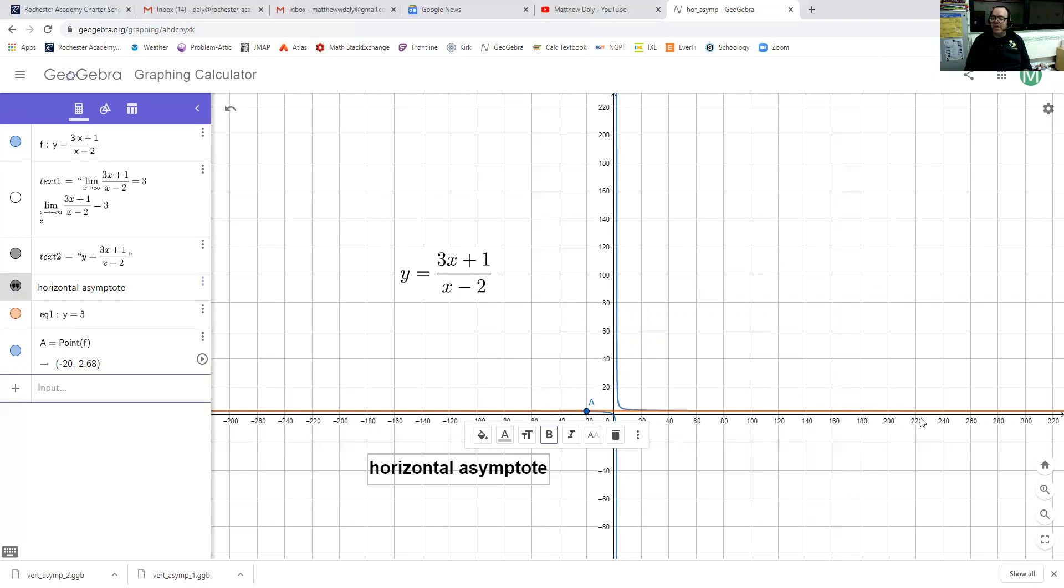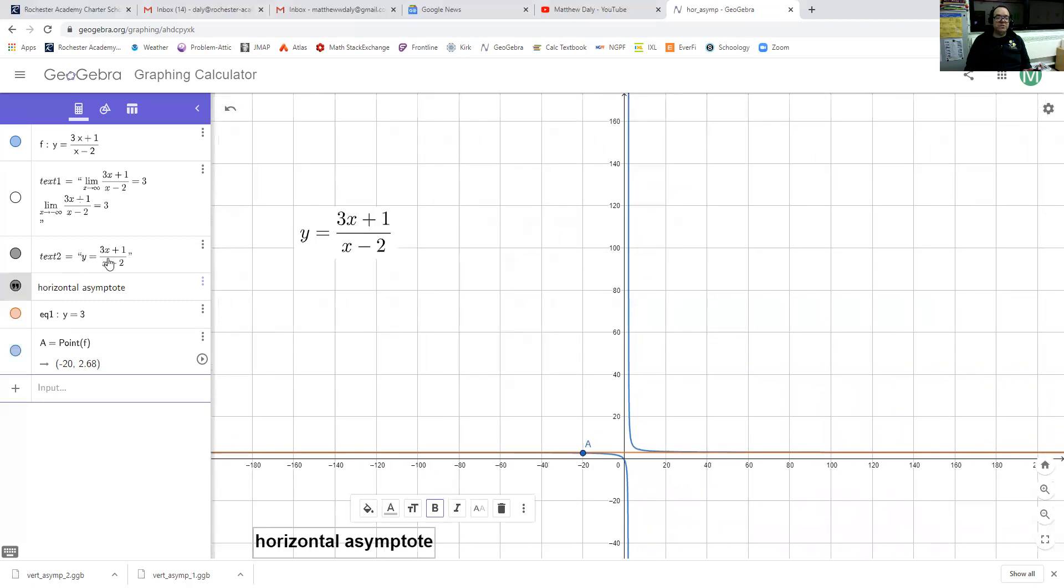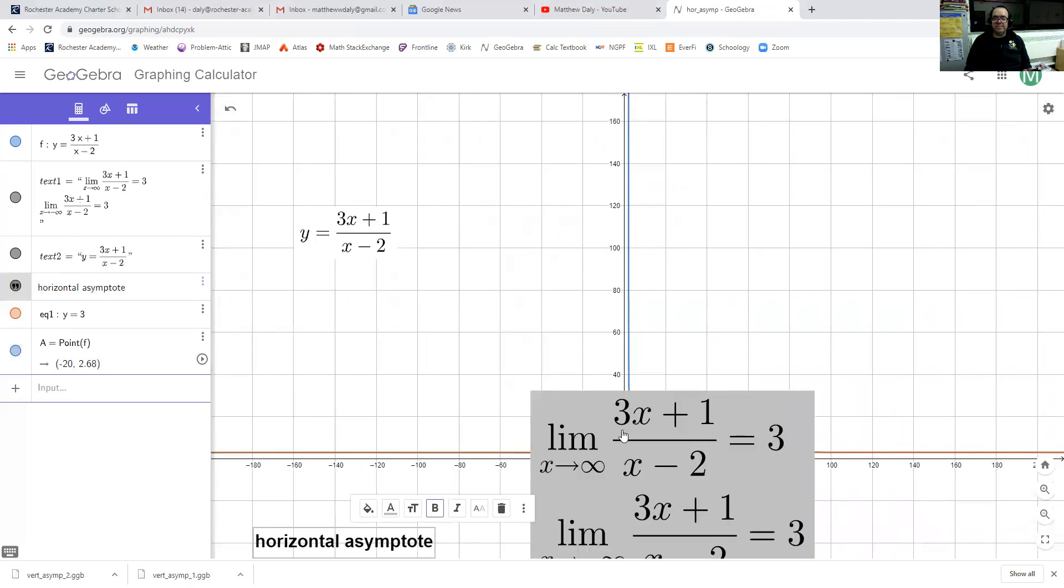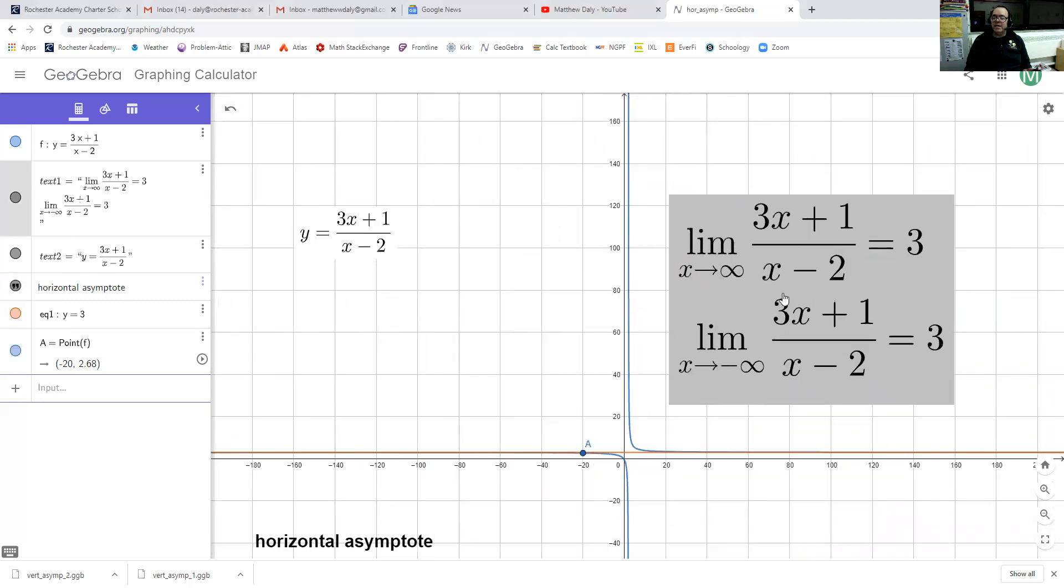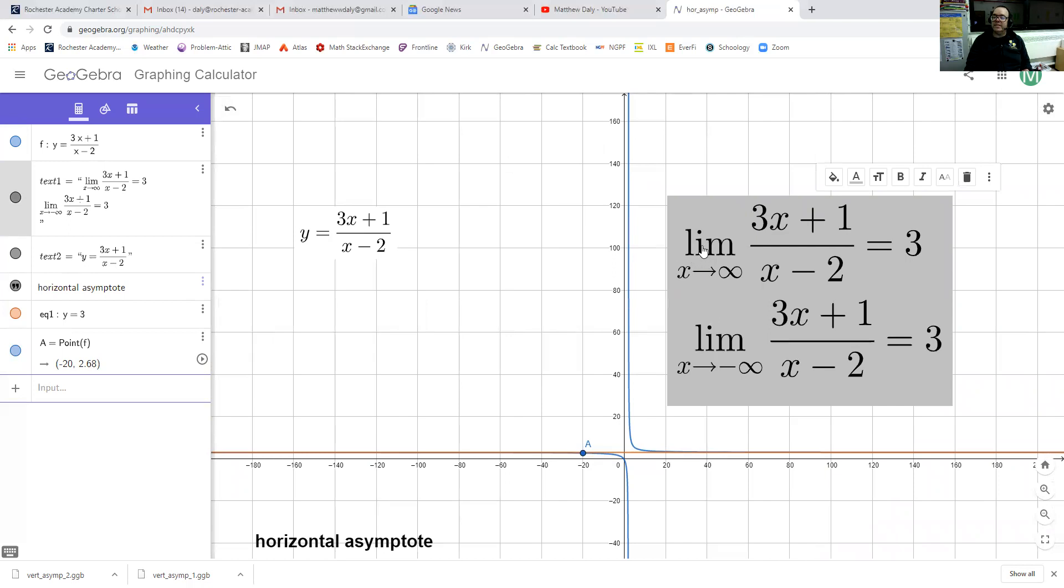This time, our heading off to infinity notion is happening with our x value instead of our y value. So see how the notation is different this time. This time, what I'm going to say is that the limit as x approaches infinity of 3x plus 1 over x minus 2 is equal to 3.